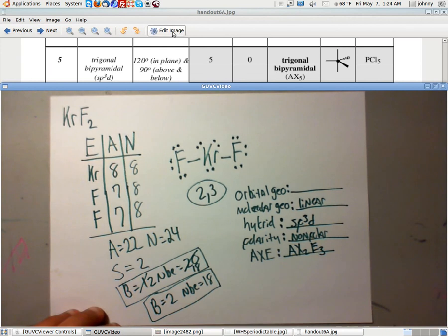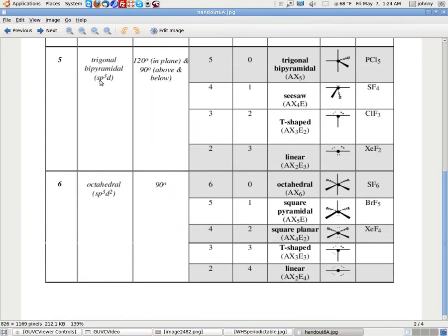Finally, the orbital geometry. That's the last one that we need to do. It's trigonal bipyramidal. Good luck fitting that on that line. Trigonal bipyramidal.